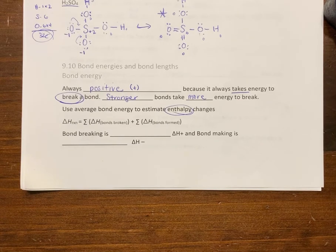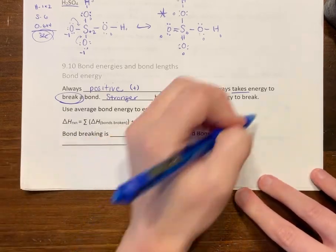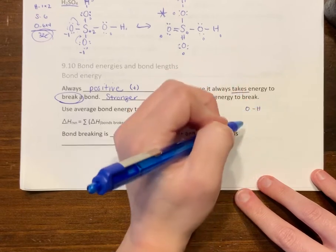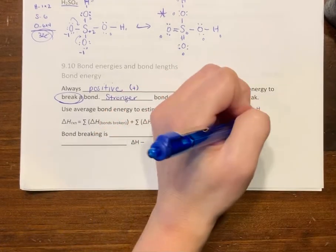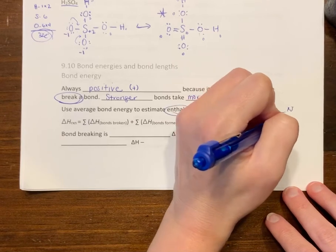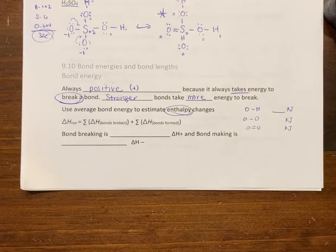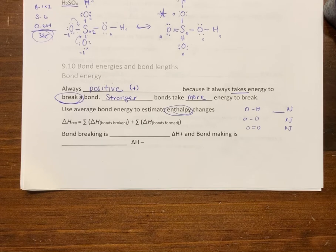You would be given a table that says, you know, an O-H bond, O-O bond, O double bond, and they'll be so much kilojoules of energy.